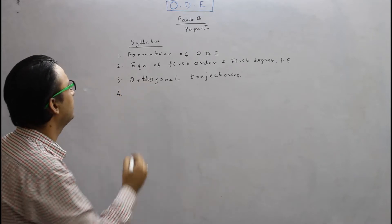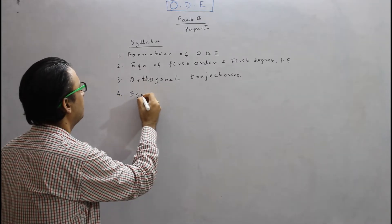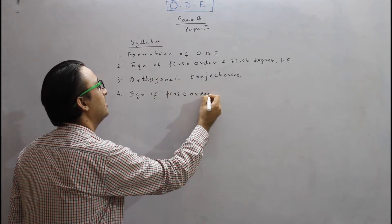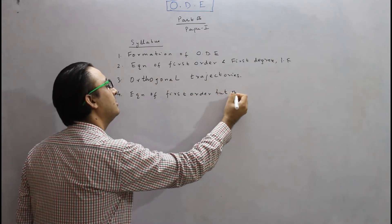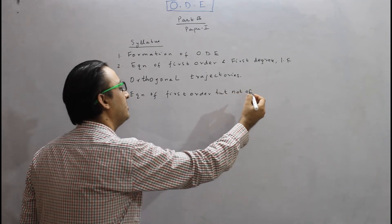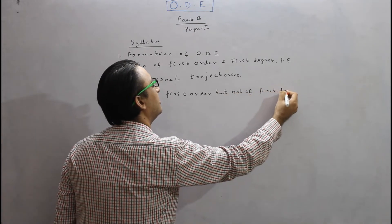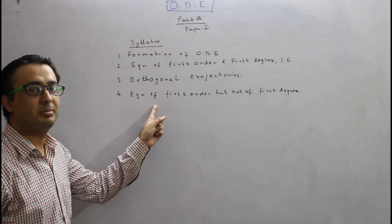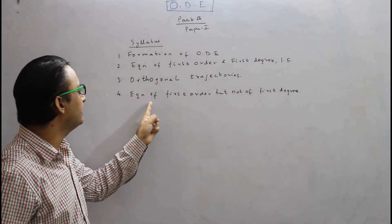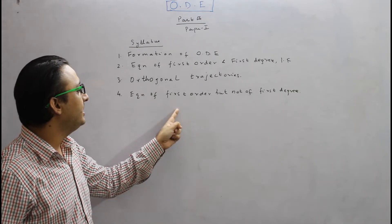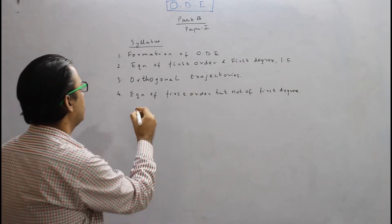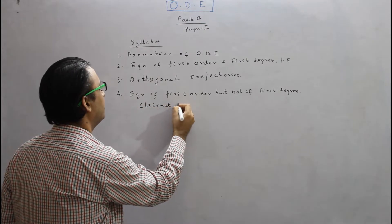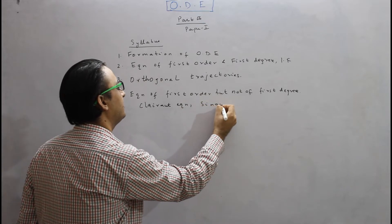Fourth is equations of first order but not of first degree. Here we are going to study solving for x, y, and p, and in the syllabus special mention is made about Clairaut equations and singular solutions.